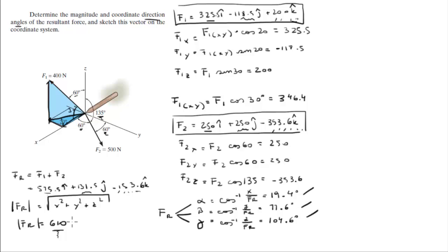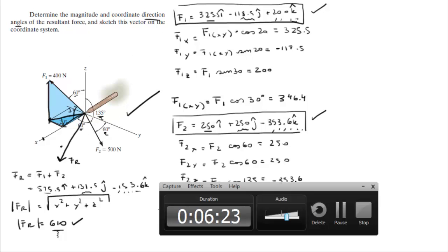These are the angles, this is the magnitude. I would hate to sketch this but let's more or less give it an idea. It's positive 575 let's say somewhere right here, 131 towards the Y somewhere right here, and negative 153 somewhere down there. So I would say that's FR, it's going down in the Z direction.